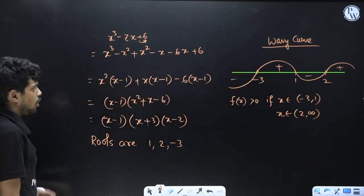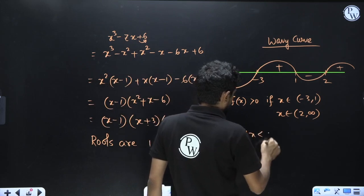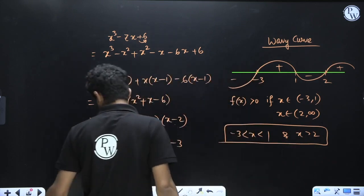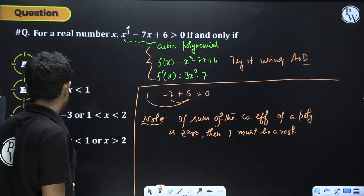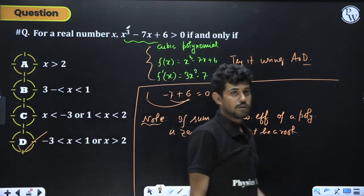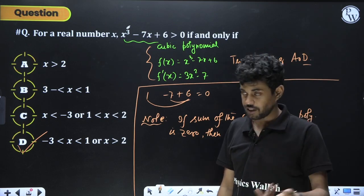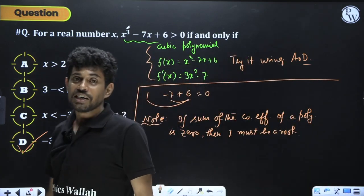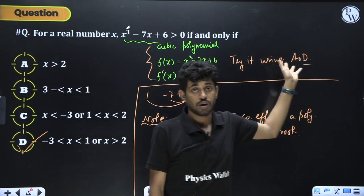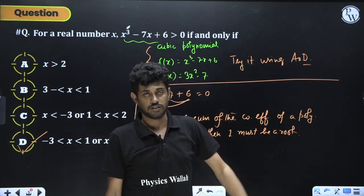Looking at the options, the answer is -3 < x < 1 or x > 2 — so option D is correct. This question is solved using just polynomial concepts from class 8-9, without using any 11-12 concept like maxima-minima or AOD. Any approach is acceptable in ISI.